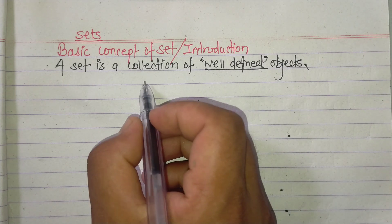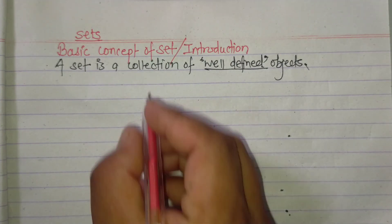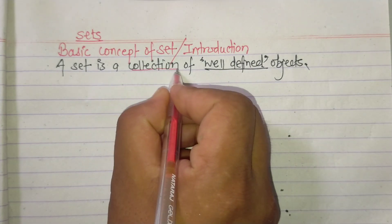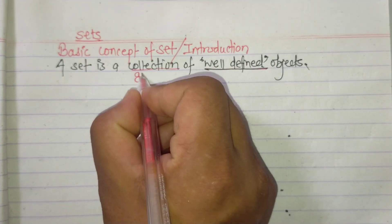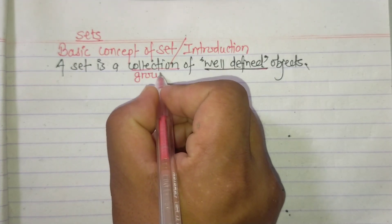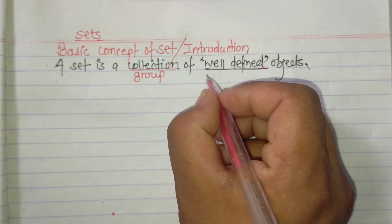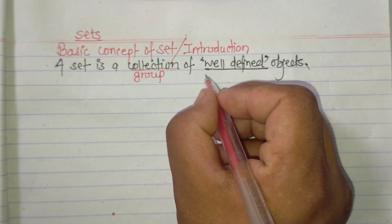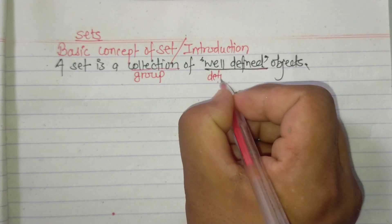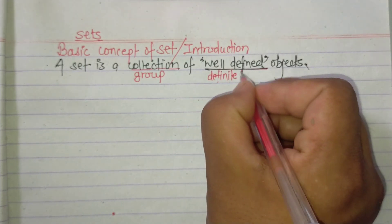Collection means a group. Well-defined means distinct or clearly determined objects.